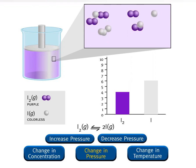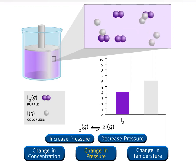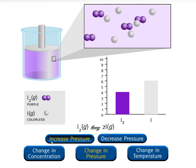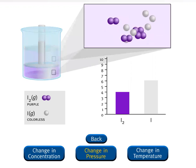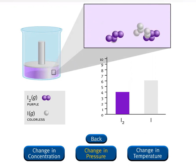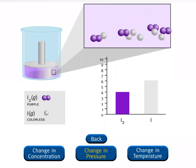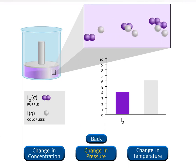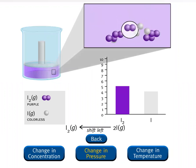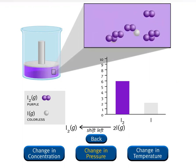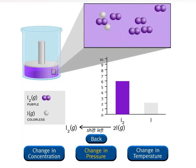You have increased the pressure by decreasing the volume of the container. The system can partially offset this stress by decreasing the moles of gas. Recall that pressure is directly proportional to the moles of gas. Because of the 2-to-1 mole ratio in the balanced equation, the moles of gas can be decreased if the system shifts to the left, producing iodine molecules and decreasing the number of iodine atoms, as you can see in the microscopic view.